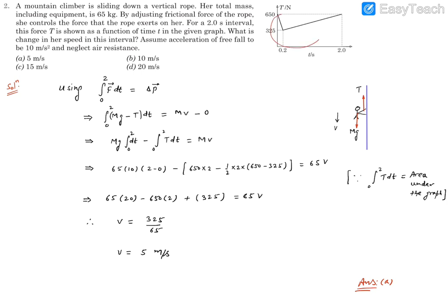So let's read this graph. This graph says the tension starts from 650, then decreases to 325 in 0.2 seconds, and then increases to again 650 newtons in 2 seconds.